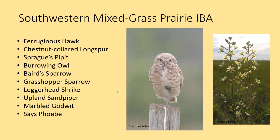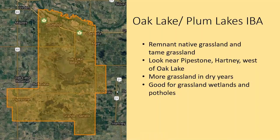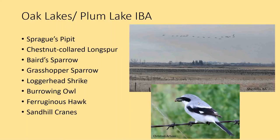The Oak Lake–Plum Lakes IBA, despite being named for two lakes, has remnant native and tame grassland especially on its western side around Bellevue and Pipestone. It gets more grassland species in dry years, so it could be an interesting spot this year if conditions stay dry. Because of the lakes and marshy areas, it's also good for grassland birds associated with wetlands. Species here include Sprague's Pipits, Chestnut-collared Longspurs, Baird's Sparrow, Grasshopper Sparrow, Loggerhead Shrike, Burrowing Owl, Ferruginous Hawk, and large concentrations of Sandhill Cranes.